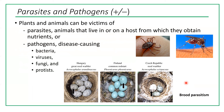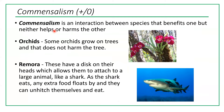Plus-zero interaction is called commensalism — an interaction between species that benefits one but neither helps nor harms the other. Orchids growing on trees is an example — they benefit from the tree but do not harm it. The remora is another example: a small fish that attaches itself to a larger animal like a shark, traveling with it for easy transport and feeding on whatever leftovers are available from the shark's meal.